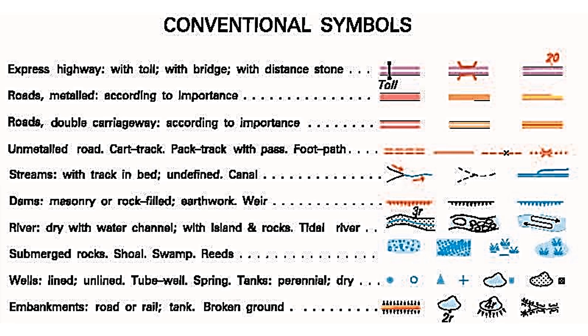Let's learn all conventional symbols. The first ones you can see are in purple color — these are the expressway, like the Pune-Mumbai expressway. This is a bridge on an expressway and this is a milestone.